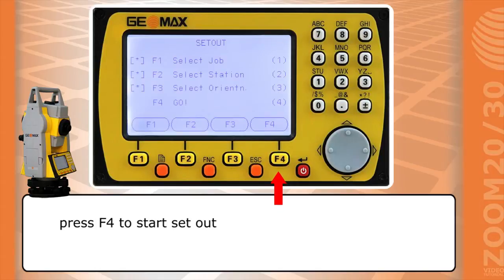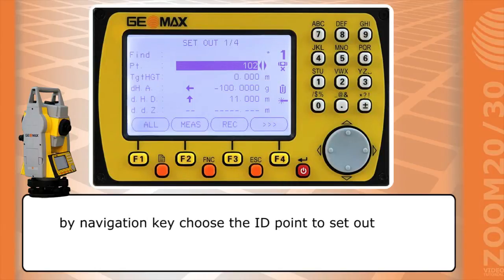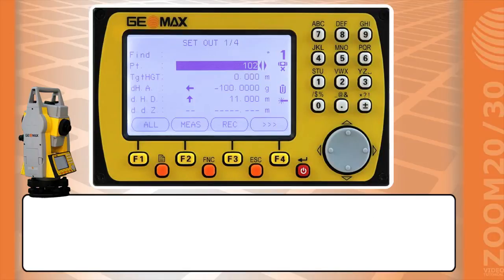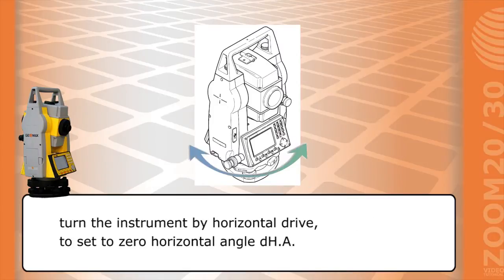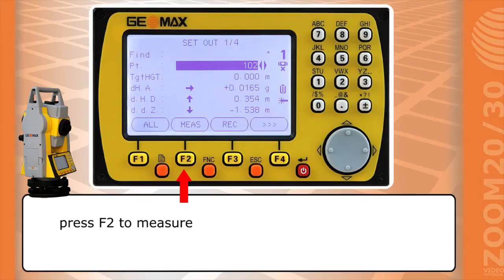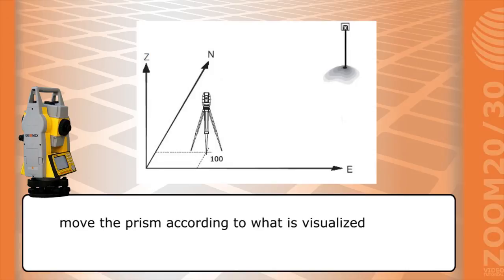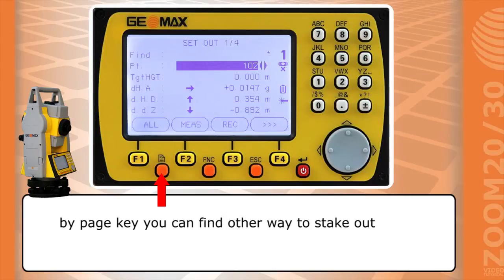Press F4 to start stakeout. By navigation key choose the ID point to stakeout. Turn the instrument by horizontal drive to set to zero horizontal angle. Press F2 to measure. Move the prism according to what is visualized. By page key you can find other ways to stakeout.